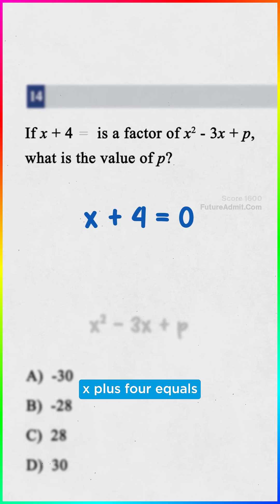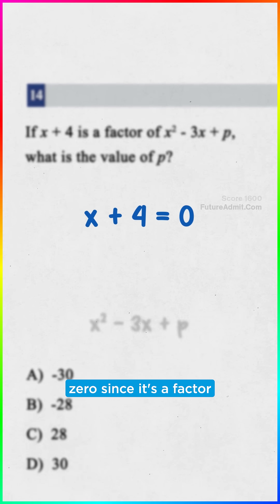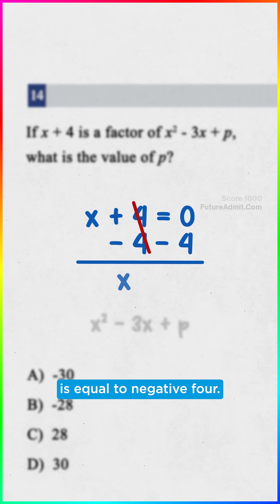Here's the TLDR. x plus 4 equals zero since it's a factor, which means x is equal to negative 4.